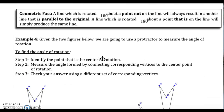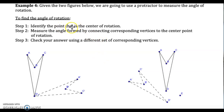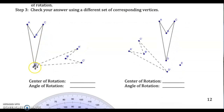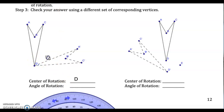Let's look at example four. Now you're going to use your protractor to measure the angle of rotation. Identify the point that is the center of rotation. Measure the angle formed by connecting corresponding vertices to the center point of rotation, and check your answer using a different set of corresponding vertices. The first one on the left is easy — I'm rotating it about point D, because they're touching at point D. To find that angle of rotation, you just measure any of these angles you want. I can measure this line — I'm going to measure angle A, D prime, A prime.